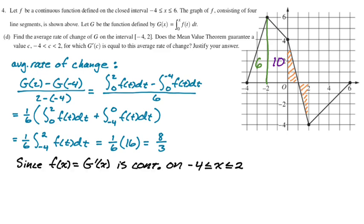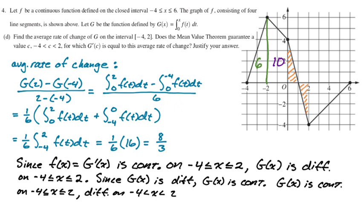So I'm going to say, since f(x) equals g prime of x is continuous on negative 4 to 2, which it definitely is continuous negative 4 to 6, but continuous from negative 4 to 2, g(x) is differentiable on that interval. Everywhere the derivative exists, a function is differentiable. So differentiable on that interval. And then I didn't know where to go, so I just went into mean value theorem mode. So since g(x) is differentiable, g(x) is continuous, g(x) is continuous on the closed interval, differentiable on the open interval. This is me not being 100% sure how they would want me to write it, so I just write everything.